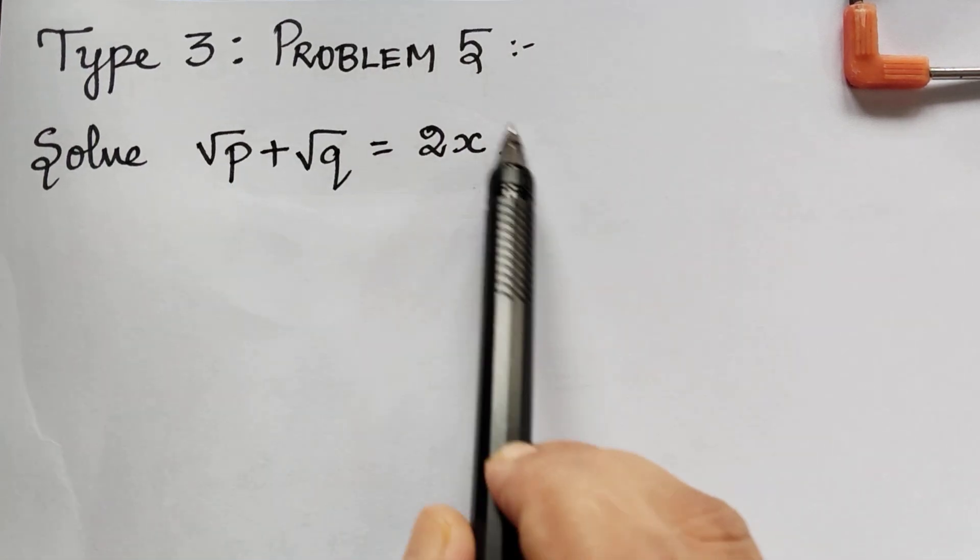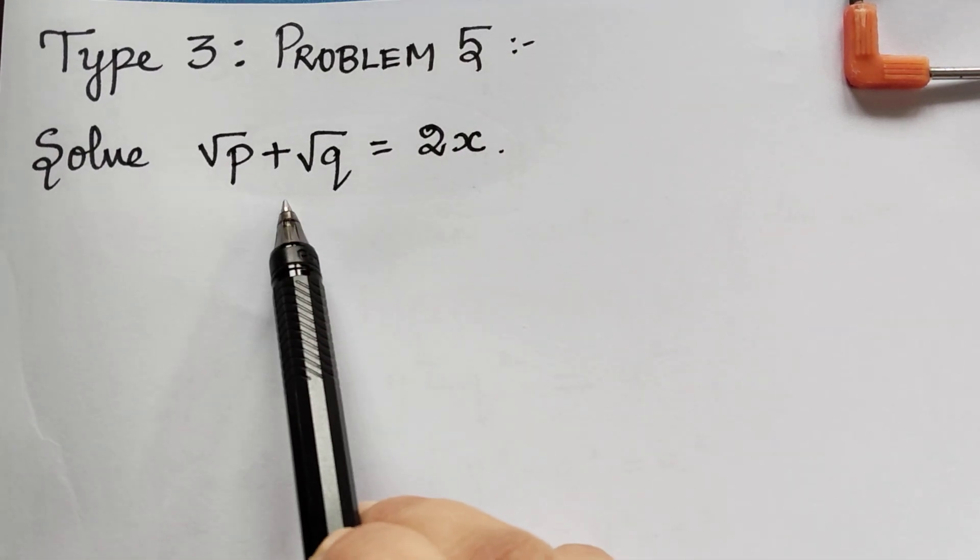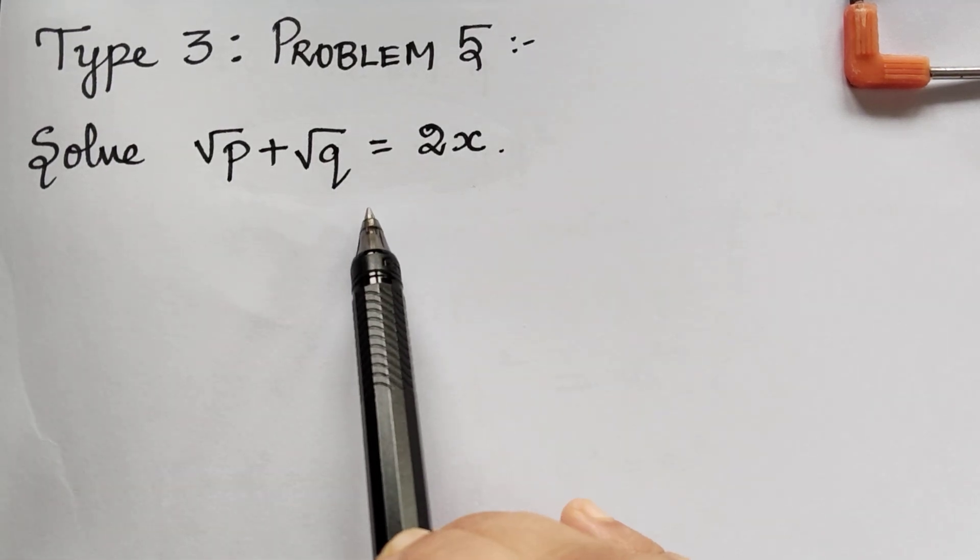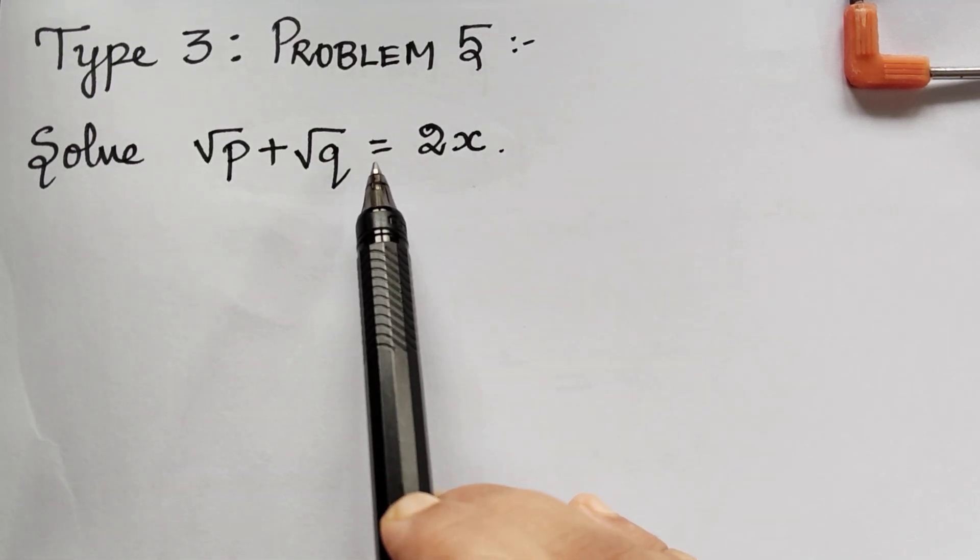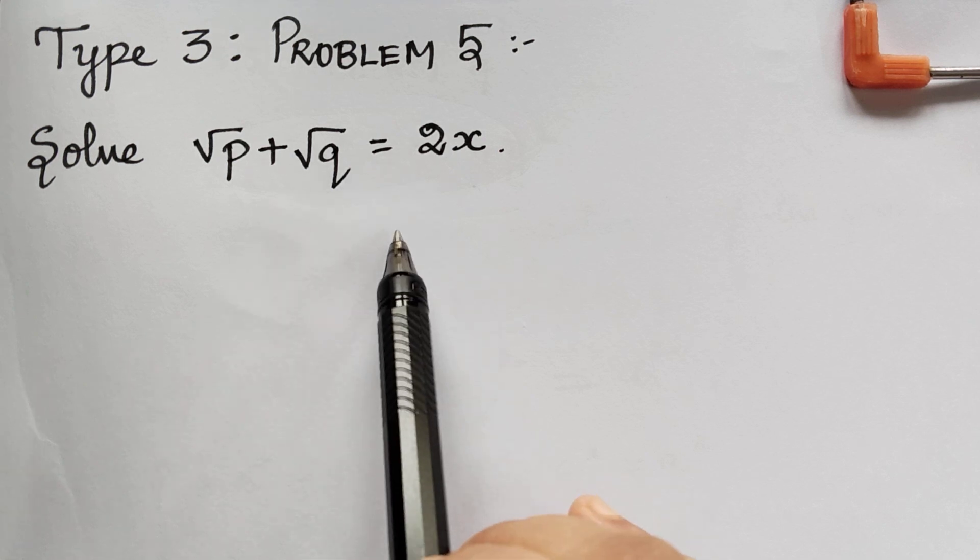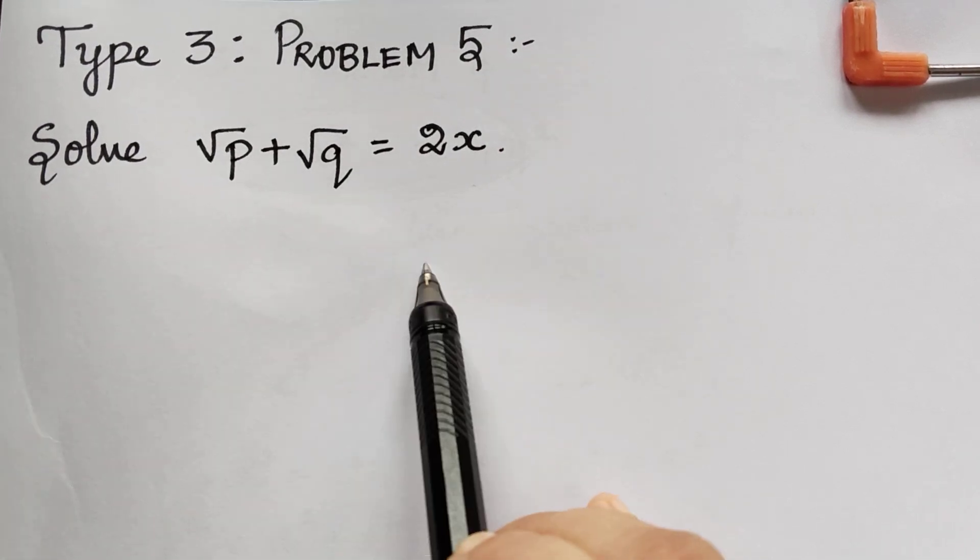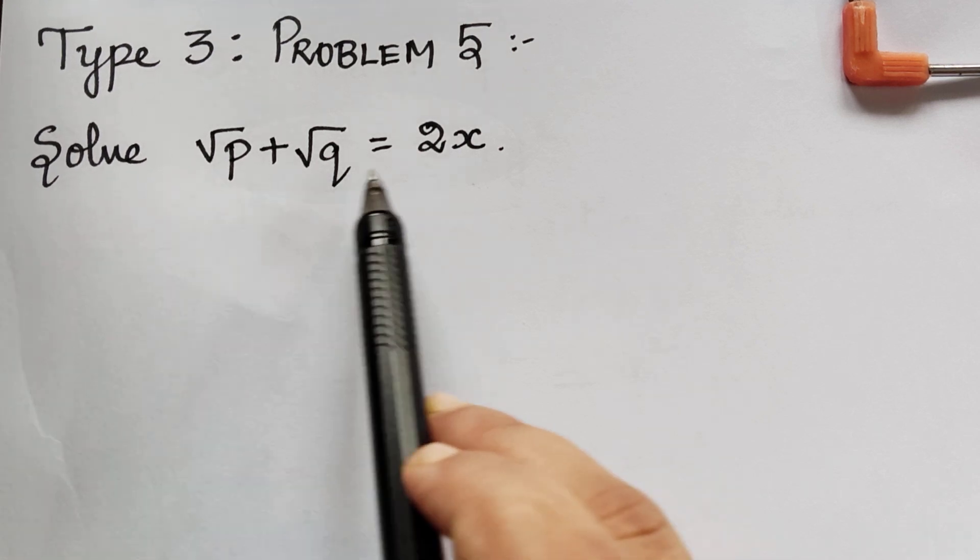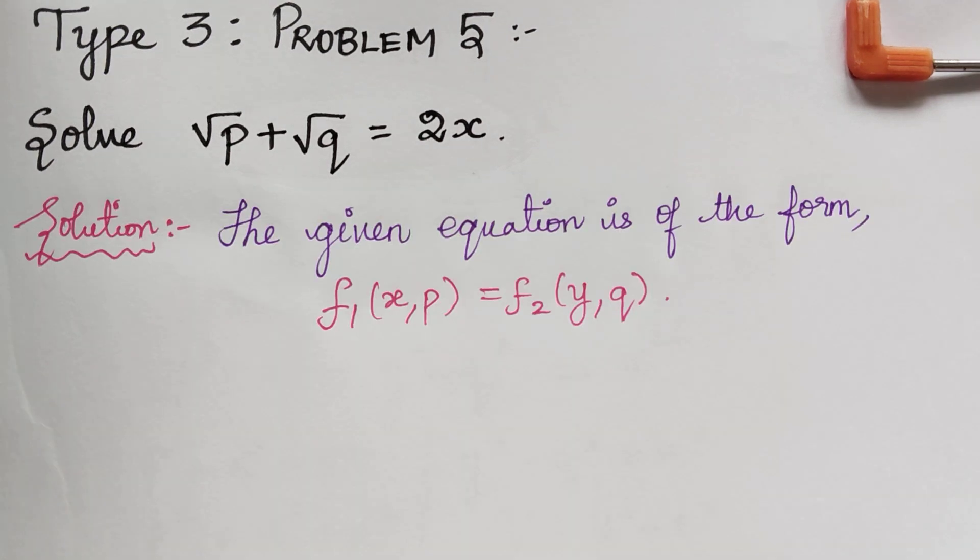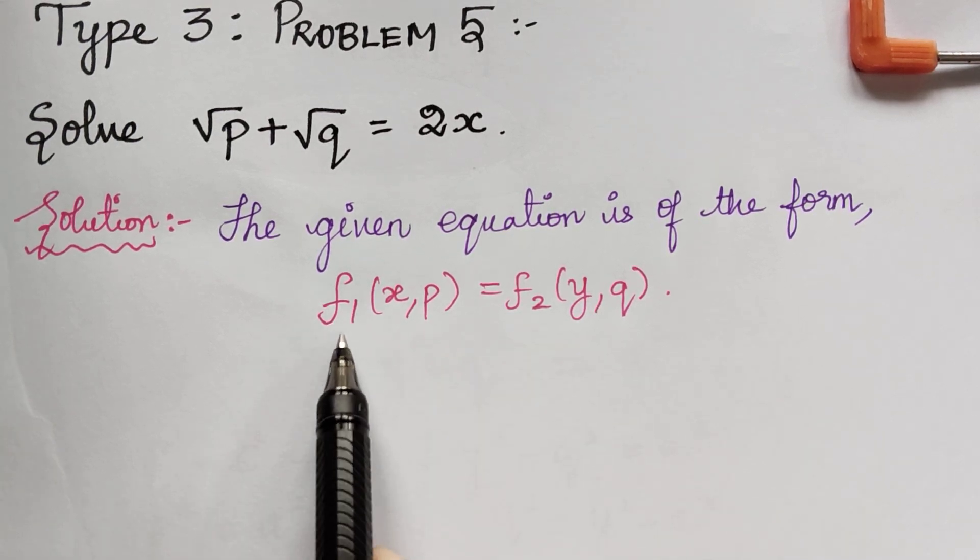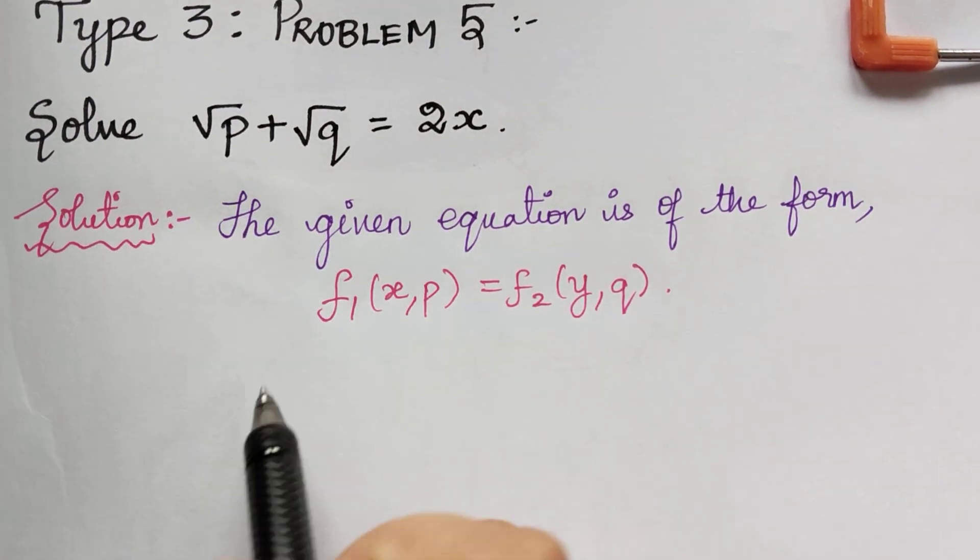If you see, we don't have y in this term also, but though we don't have y, it will come under this type only. I mentioned this while solving the first problem. Remember, whenever z is not present, the given equation is of the form f₁(x,p) = f₂(y,q). Now we will gather the x and p terms to the left.